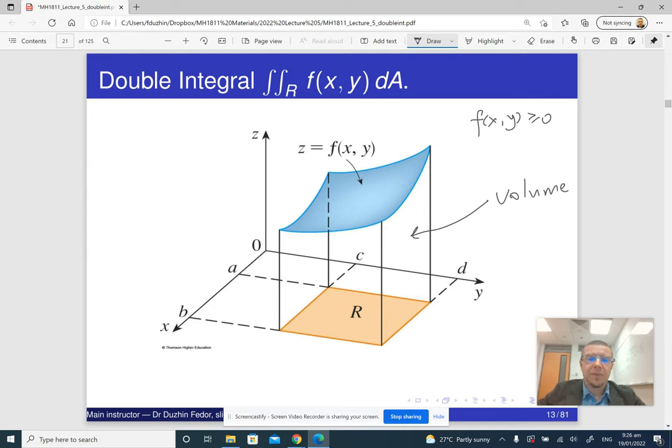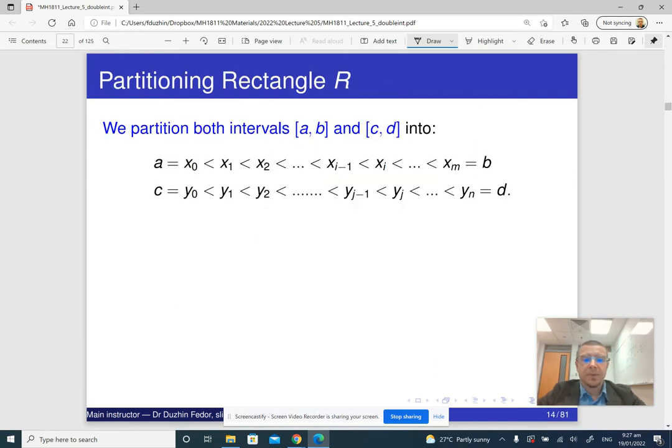So if f may be negative, then we will have to take volumes where f is positive with the positive sign, minus the volumes where f is negative. But anyway, so we partition both intervals a, b, and c, d into smaller parts.